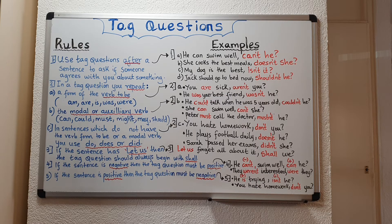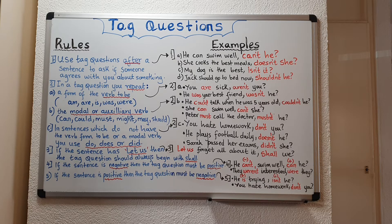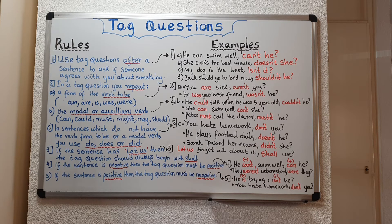Rule number 2b: in a tag question, you repeat the modal or auxiliary verb. Some examples of modal or auxiliary verbs are can, could, must, might, may, and should. I have uploaded a video about modal verbs — feel free to have a look. In a tag question, you repeat the modal or auxiliary verb.